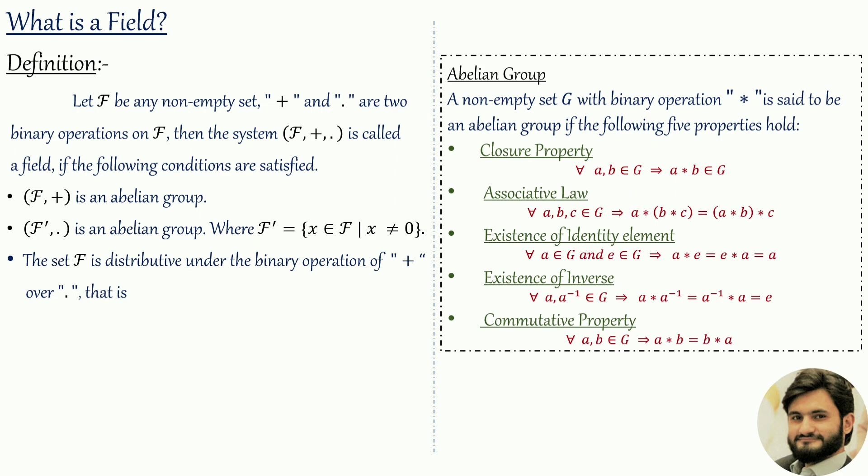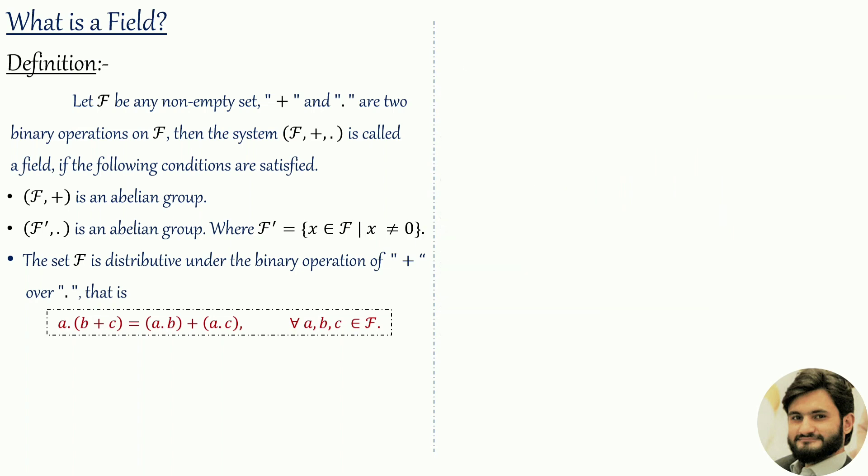The third condition of the field: the set f is distributive under the binary operation of addition over multiplication. That is, a · (b + c) = a · b + a · c, where dot represents multiplication, for all a, b, c belonging to f. If any non-empty set satisfies all three conditions, we say that set is a field.